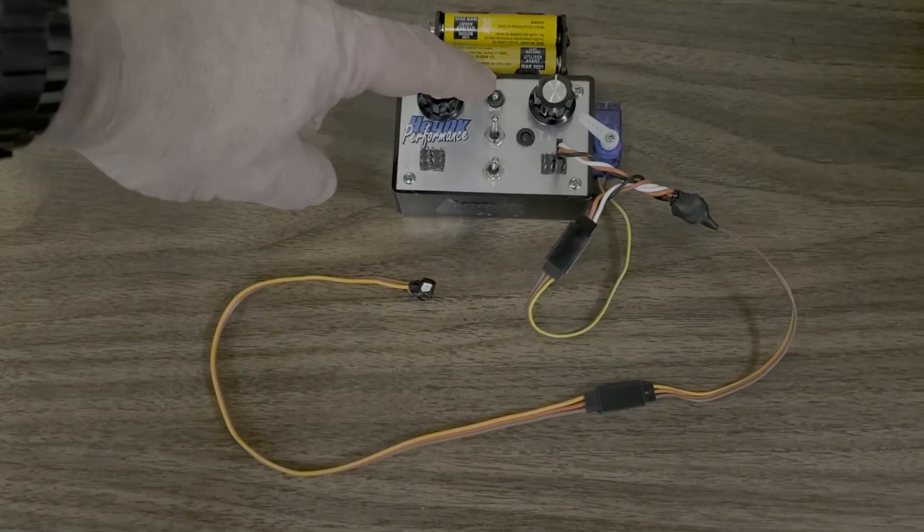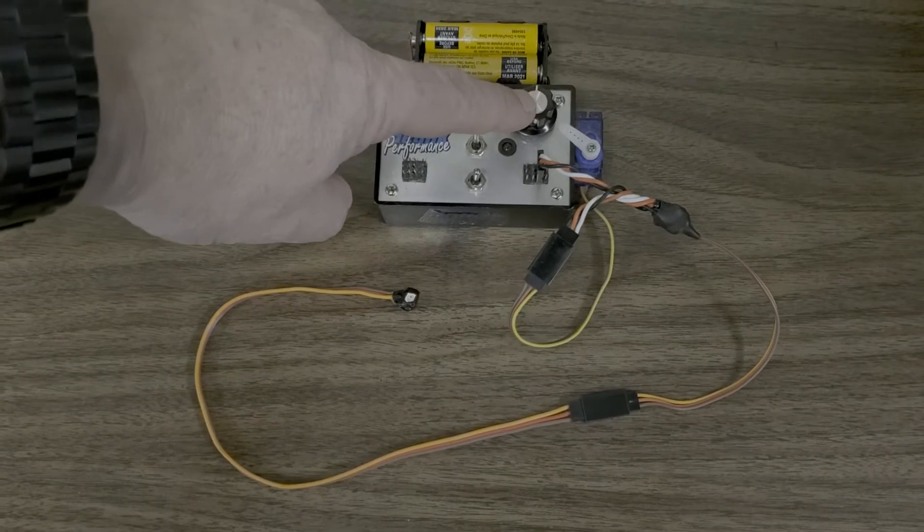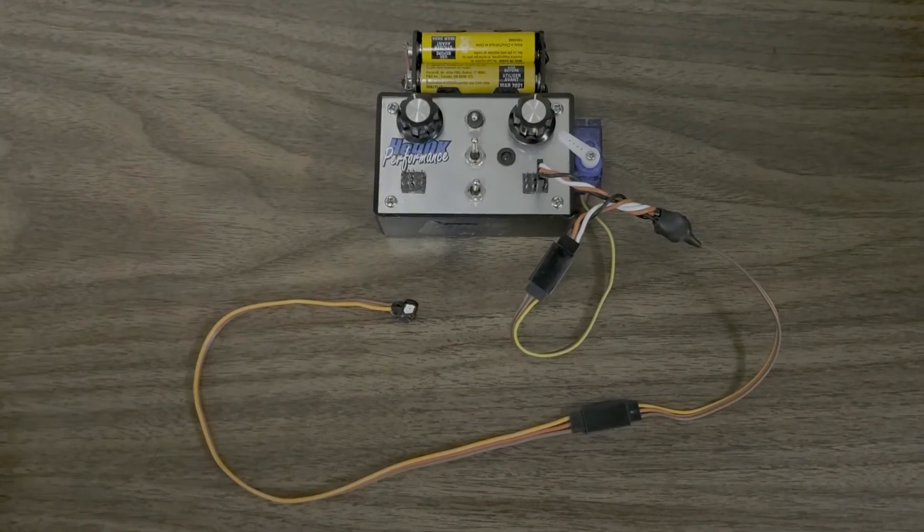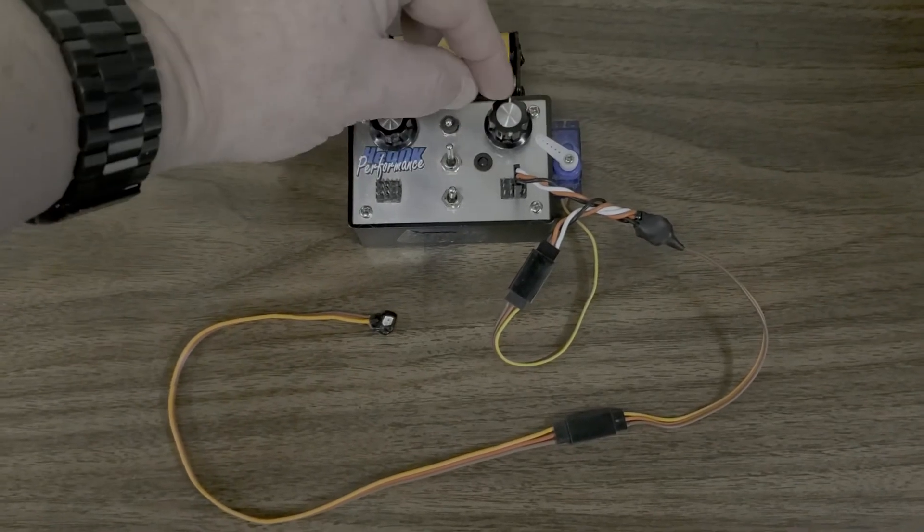This is my servo tester. I'm going to turn it on in a moment and I'm going to rotate this to simulate either steering or speed control. Right now the position's in the middle. You can see the white mark.